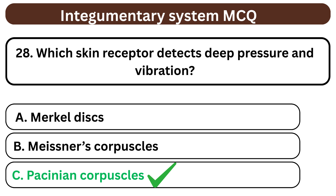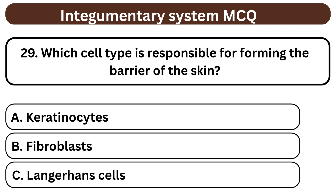Question 29. Which cell type is responsible for forming the barrier of the skin? A. Keratinocytes. B. Fibroblasts. C. Langerhans cells. The answer is A. Keratinocytes.